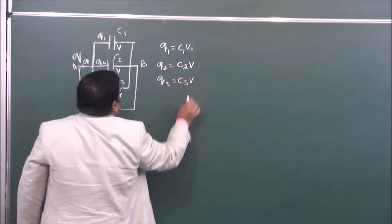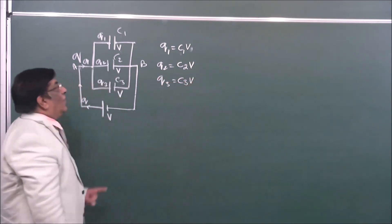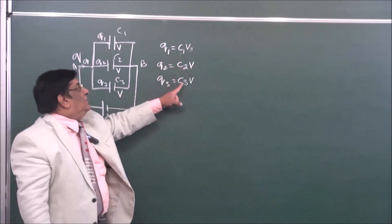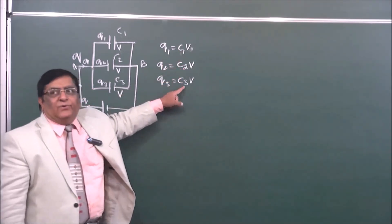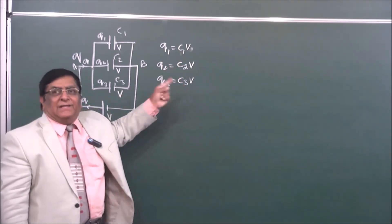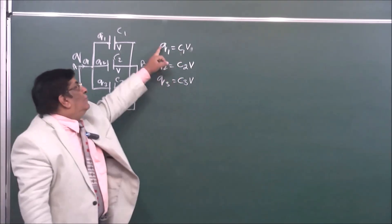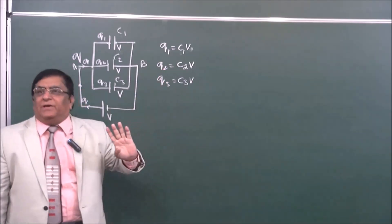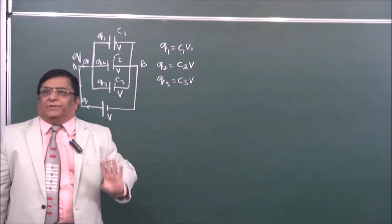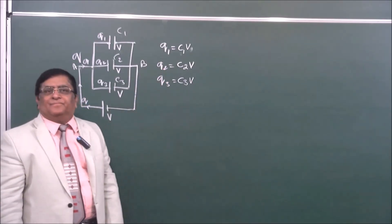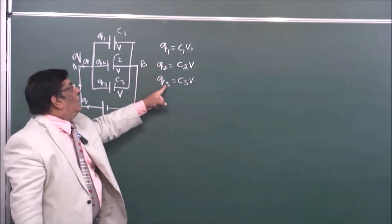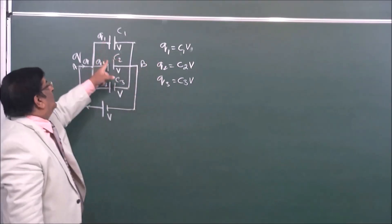Q3 is equal to C3 multiplied by V. Since C1, C2, and C3 have different values, this charge will be different for each capacitor.